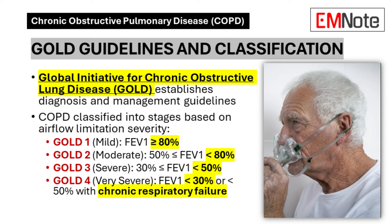The Global Initiative for Chronic Obstructive Lung Disease, GOLD, provides internationally recognized guidelines for the diagnosis and management of COPD. These guidelines include a classification system based on the severity of airflow limitation as measured by spirometry. The GOLD stages range from one (mild) to four (very severe), with corresponding FEV1 values. This classification system aids clinicians in assessing disease severity, guiding treatment decisions, and monitoring disease progression over time.